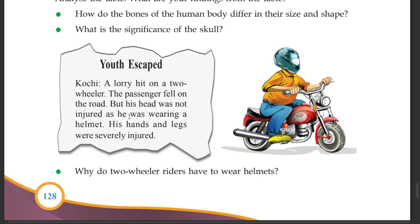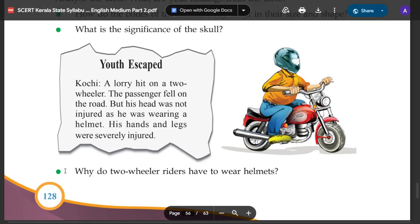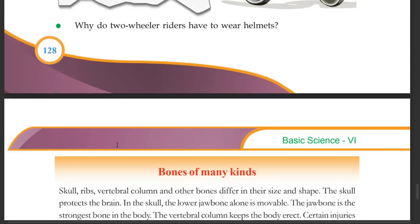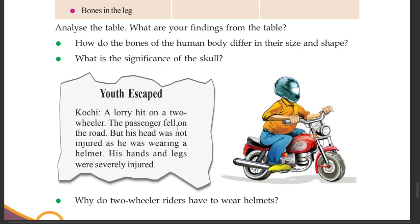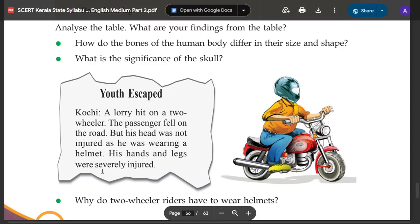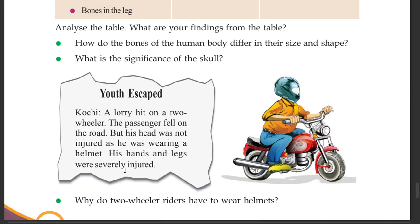A lorry hit a two-wheeler and the passenger fell on the road, but his head was not injured because he was wearing a helmet. His hands and legs were severely injured. Why do two-wheeler riders have to wear helmets? The skull acts like a natural helmet protecting the brain, so we also wear helmets.